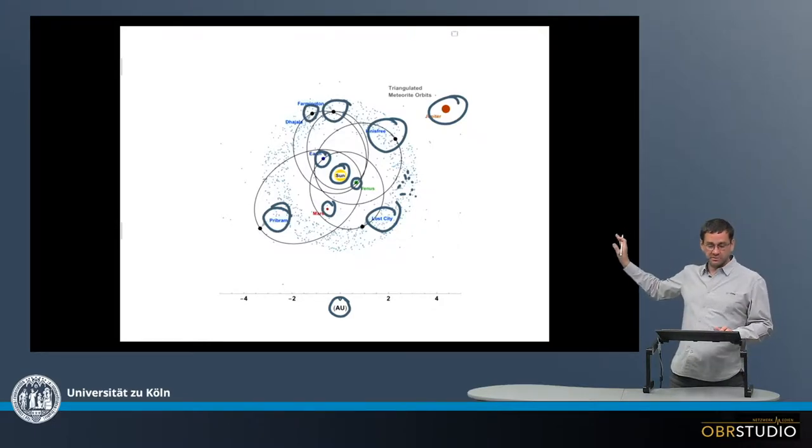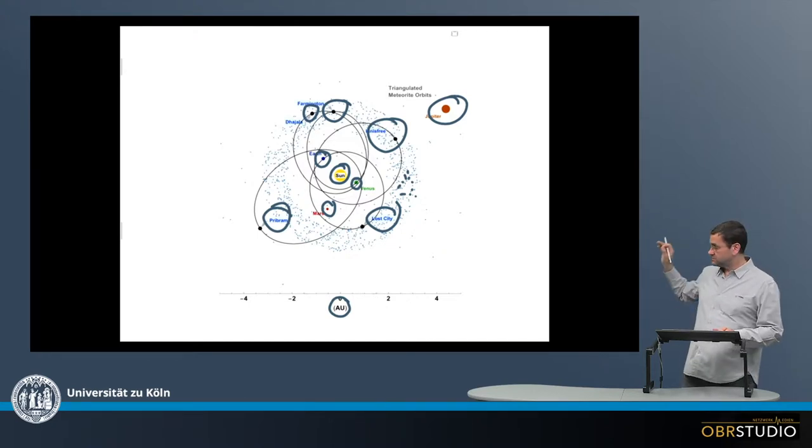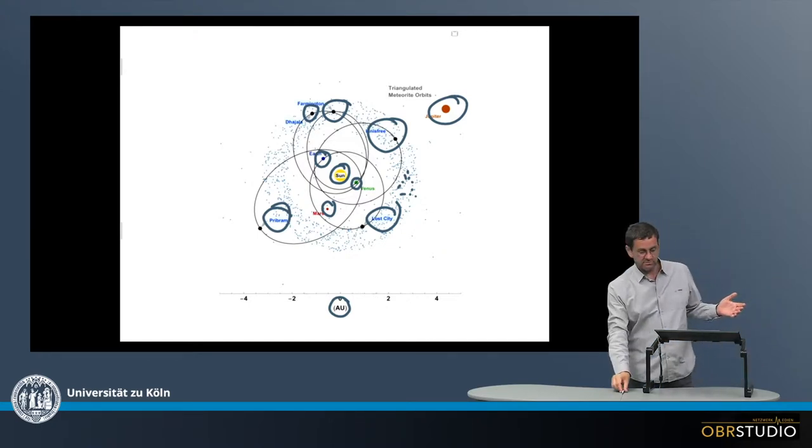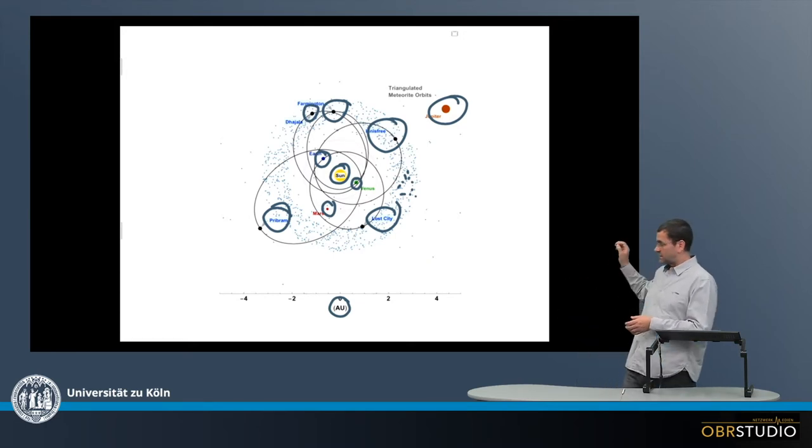And we can see that these orbits all cross the asteroid belt and of course Earth, because they have somehow been deflected out of the asteroid belt by the Kirkwood gaps, for example, and now are on Earth-crossing orbits. But importantly, all these meteorites have their origin in the asteroid belt, and this is direct and very good evidence that the ordinary chondrites and likely all the other chondrites originally come from the asteroid belt.